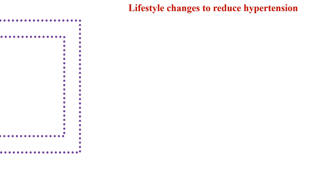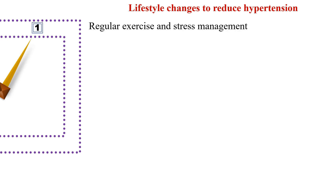Lifestyle changes to reduce hypertension: blood pressure can be managed and hypertension can be reduced by adhering to the following activities. Number one: regular exercise and stress management. Exercise such as walking, jogging, cycling, swimming, and dancing makes the heart stronger. A strong heart pumps sufficient blood with minimum effort, decreasing pressure on the arteries and hence reducing blood pressure. Stress management can also be achieved through regular meditation or yoga.